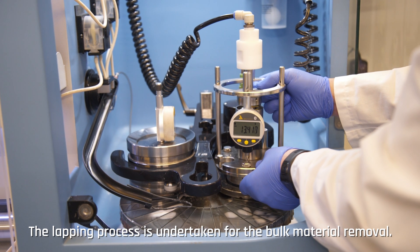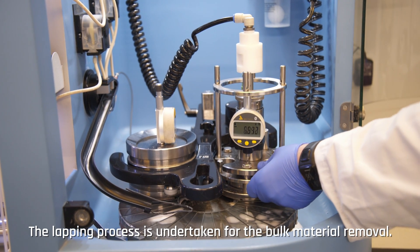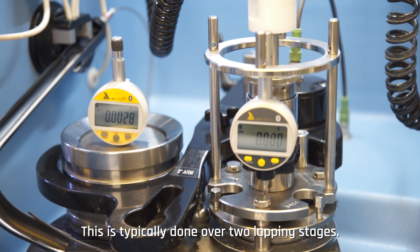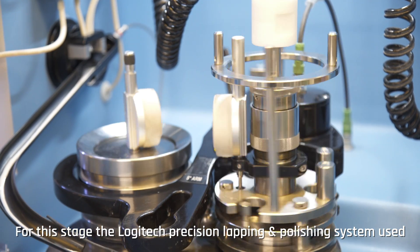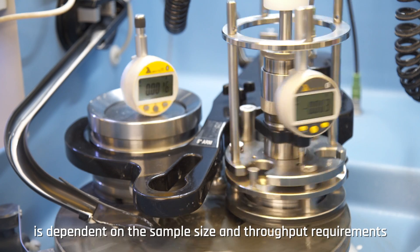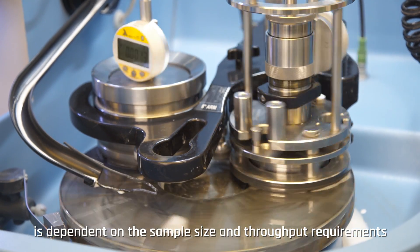The lapping process is undertaken for the bulk material removal. This is typically done over two lapping stages. For this stage, the Logitech precision lapping and polishing system used is dependent on sample size and throughput requirements for the customer specific requirements.